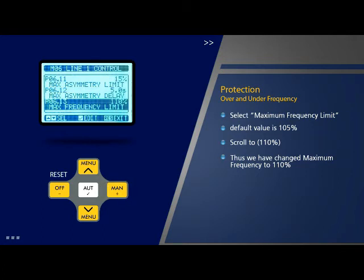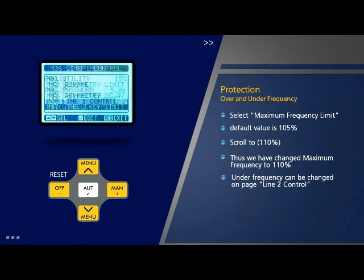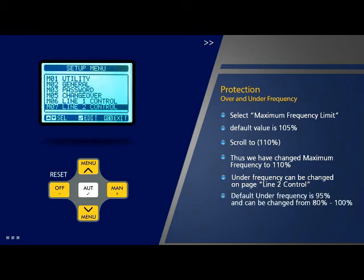Similarly, the set value for under frequency can be changed using the parameters on the line 1 control page. The default value for this parameter is 95% and can be changed in the range of 80% to 100%. On similar lines, the set values for over and under frequency for line 2 can be changed by selecting the respective parameters on the page 'Line 2 Control'.